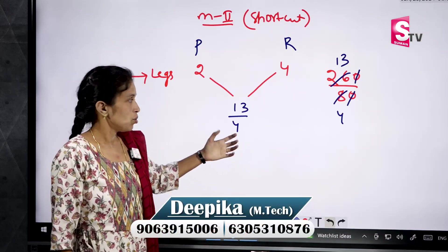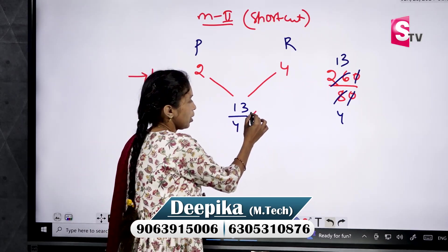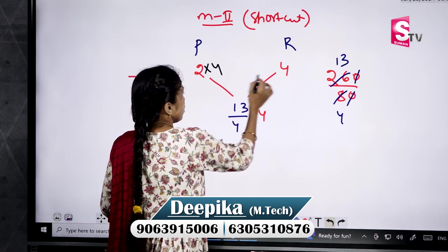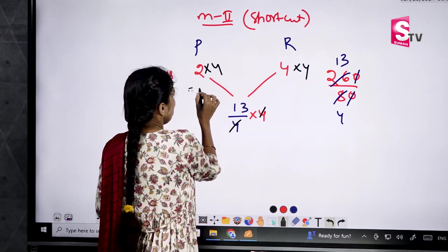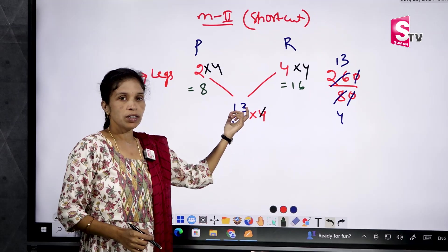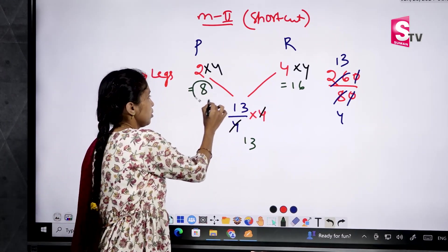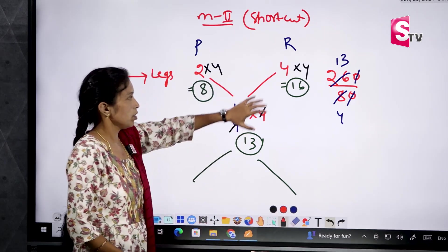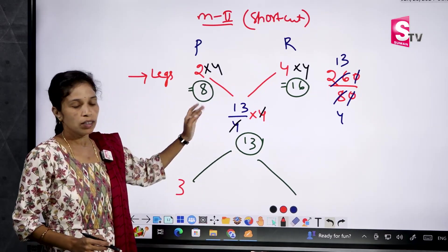This is in fraction form. To remove the fraction, multiply all three values by 4: 2 times 4 is 8, 4 times 4 is 16, and 13 by 4 times 4 gives 13. So the three numbers are 8, 16, and 13. Now subtract: 16 minus 13 equals 3, and 13 minus 8 equals 5.